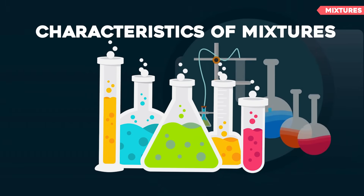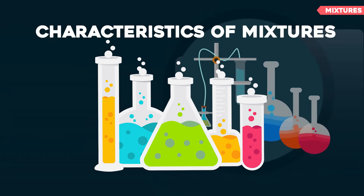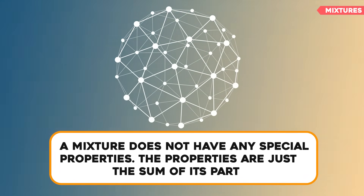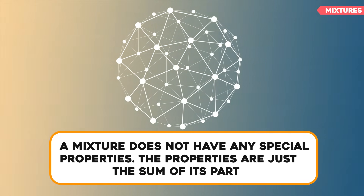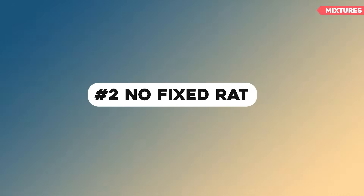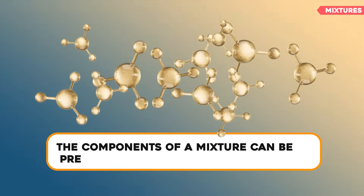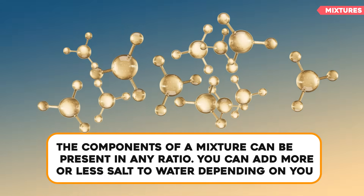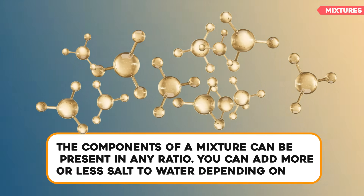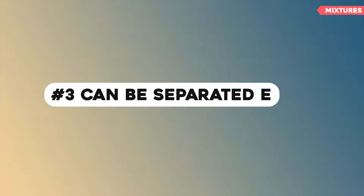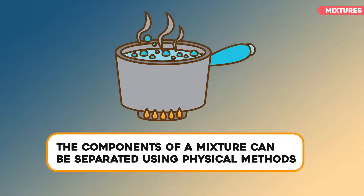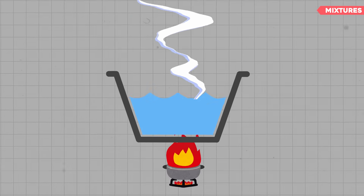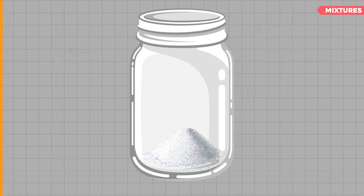Characteristics of Mixtures. Let's look at the characteristics of mixtures. First, no new properties: a mixture doesn't have its own special properties — the properties are just the sum of its parts. Second, no fixed ratio: the components of a mixture can be present in any ratio. You can add more or less salt to water depending on your taste. Third, can be separated easily: the components of a mixture can be separated using physical methods. For example, you can evaporate the water to get the salt back.